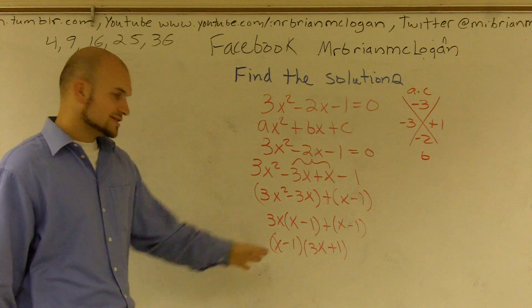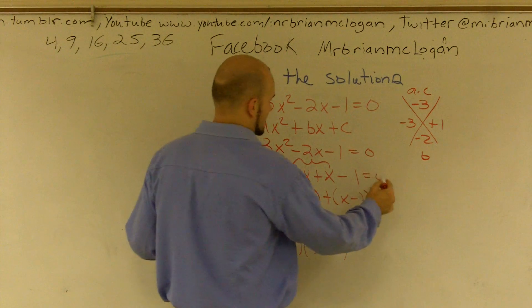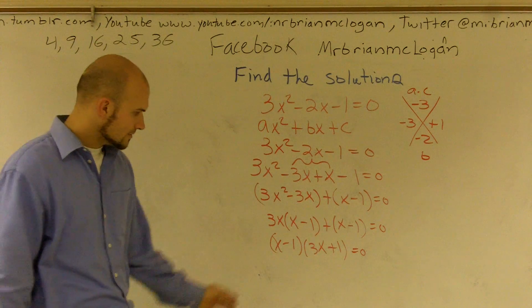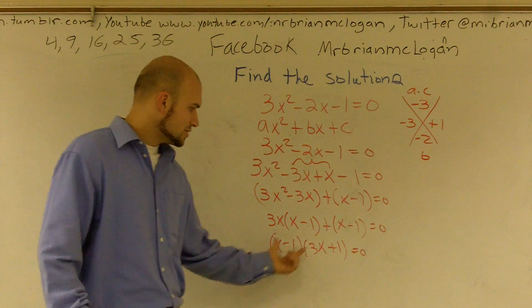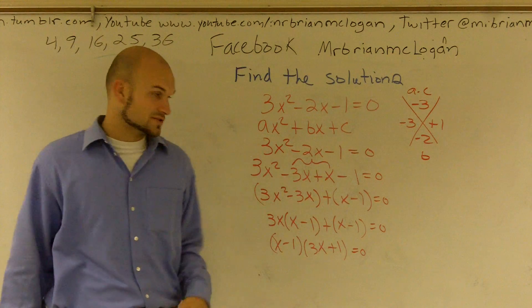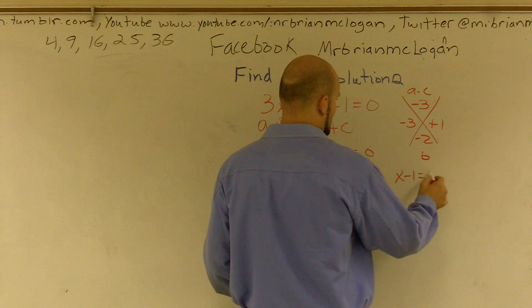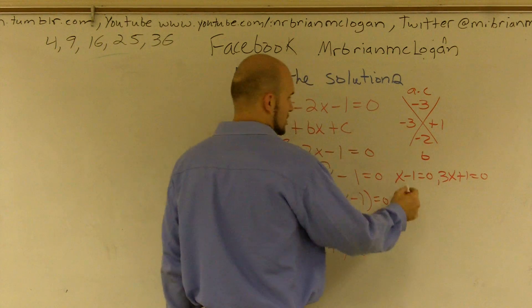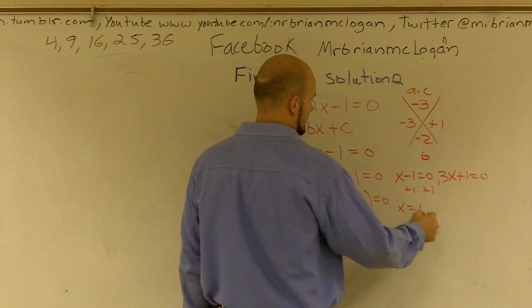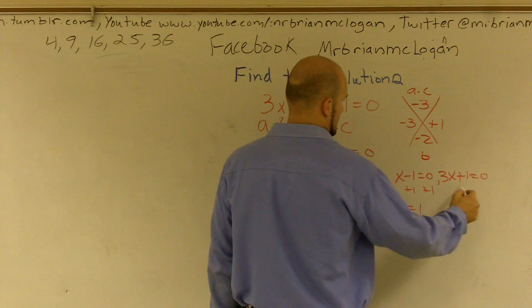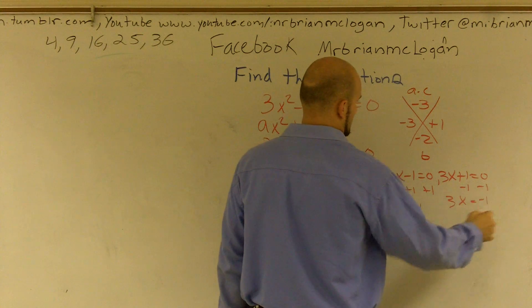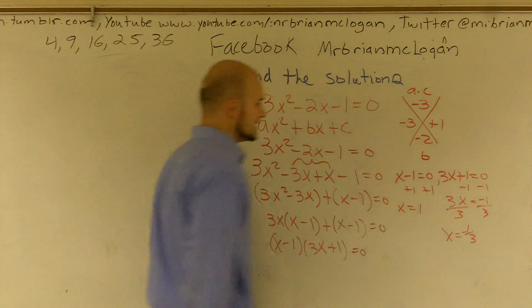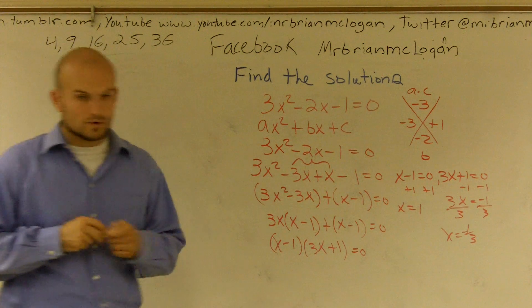So instead of finding the solutions, those are the two factors. But I have each of these still equals 0. So if a binomial times a binomial equals 0, I can write x minus 1 equals 0 and 3x plus 1 equals 0. Solving for x, my two values are x equals 1 and x equals negative one-third.